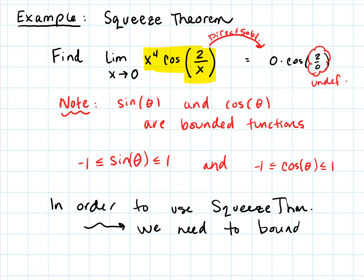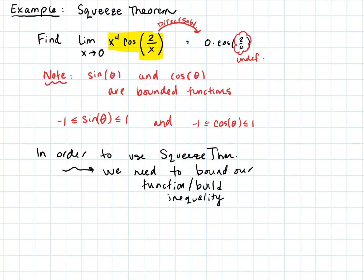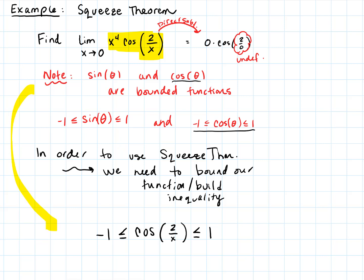In order to use the squeeze theorem, we need to bound our function — we have to build the inequality. I'll start with just cos(2/x) and bring in x⁴ in a moment. Because cosine is a bounded function, cos(2/x) is bounded as well, so: −1 ≤ cos(2/x) ≤ 1. This follows directly from our prerequisite knowledge: the output of cosine of any angle — whether it's 2/x or anything else — must be between −1 and 1.